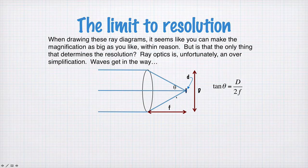Or what, if you're focusing down like in this diagram here, what's the smallest size spot you can make with a lens?